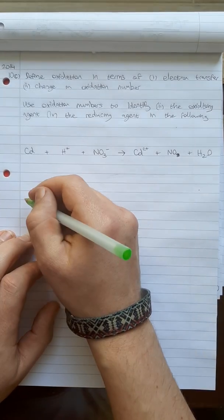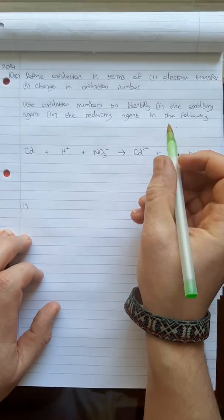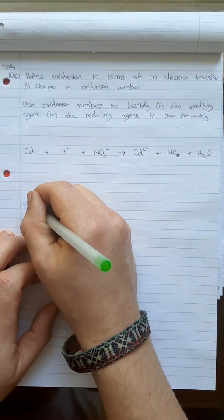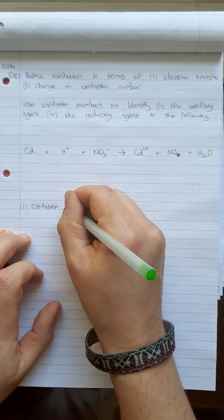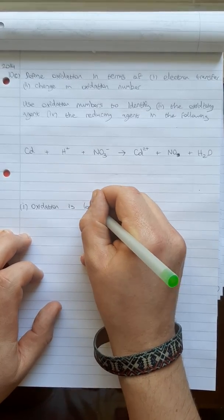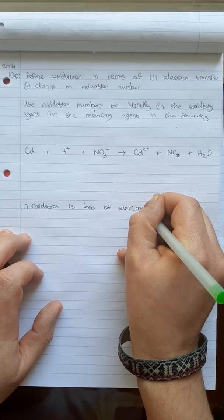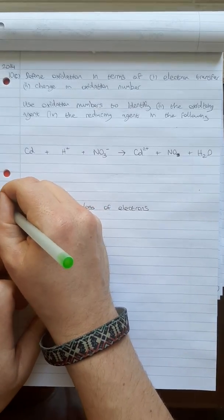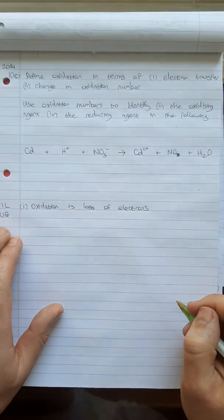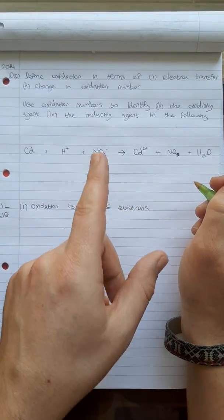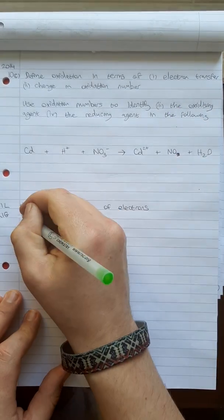It says define oxidation in terms of one electron transfer and to change an oxidation number. So if we just answer those questions down here for a start. So in terms of oxidation, you'll know oxidation is loss of electrons. So OIL RIG. Oxidation is loss. Reduction is gain. So that answer is the first one in terms of electron transfer. Oxidation is loss of electrons.